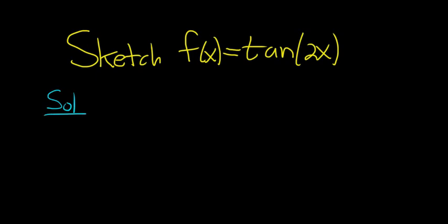To graph the tangent function, all you do is you take this number here, so 2x, and you set it equal to negative pi over 2. Then you do the same thing and you set it equal to pi over 2.